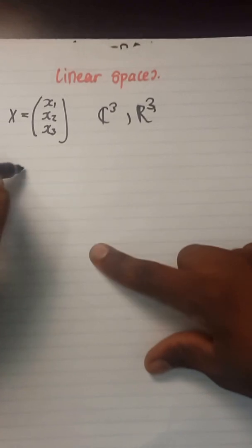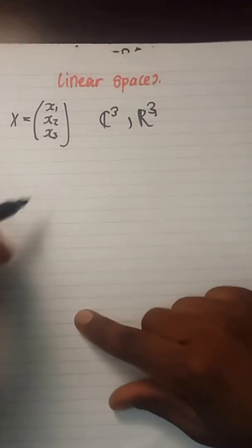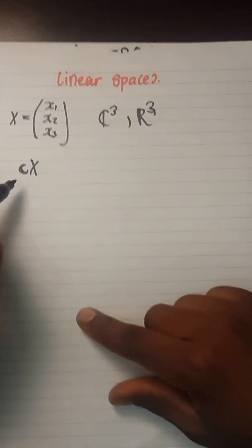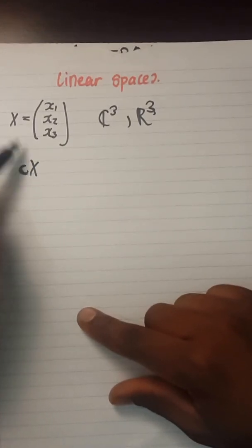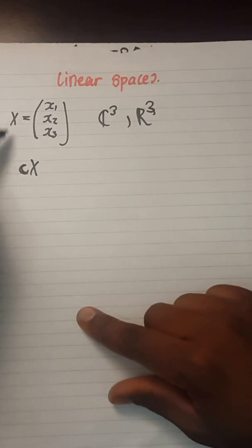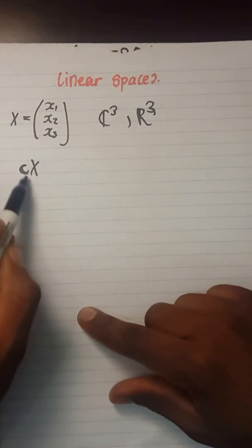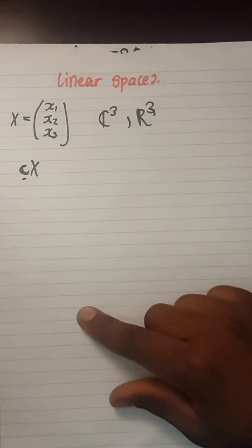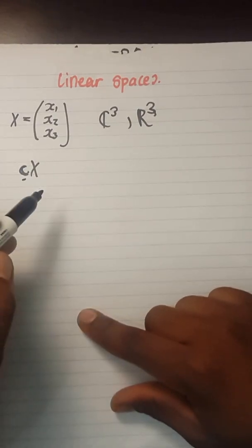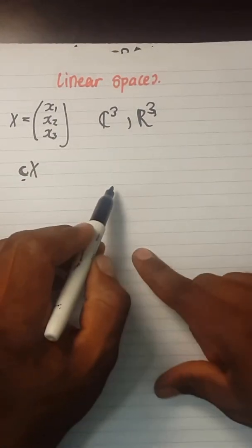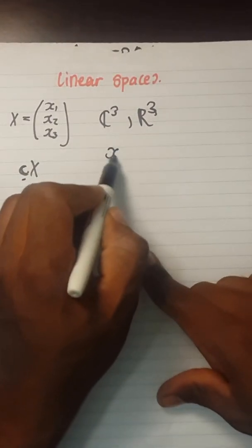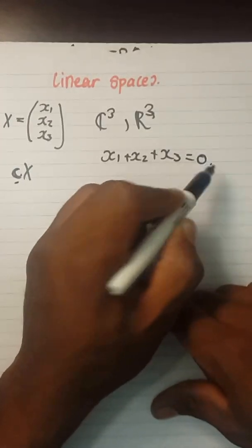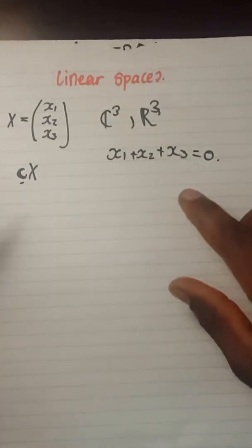To show it's a linear space, there are two things you need to prove. First, you need to show multiplication by a scalar - if you multiply the vector X by a scalar C which is a constant, you must get the result given on the rule. Say the rule is X1 plus X2 plus X3 equals zero.